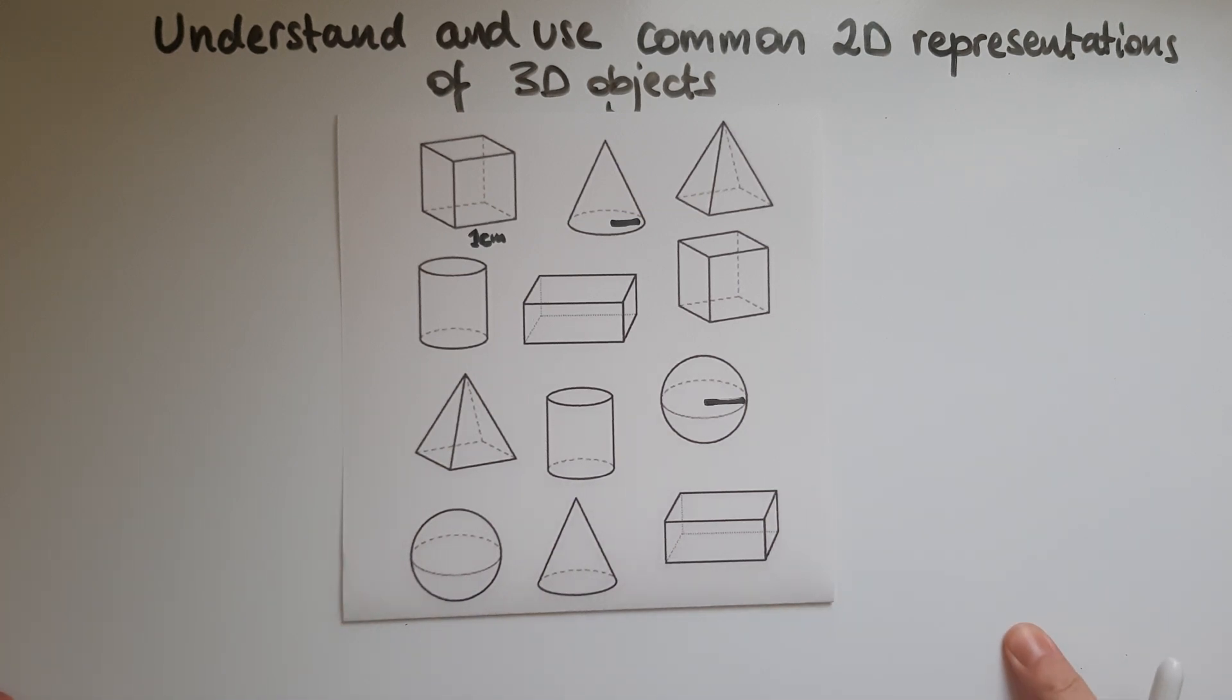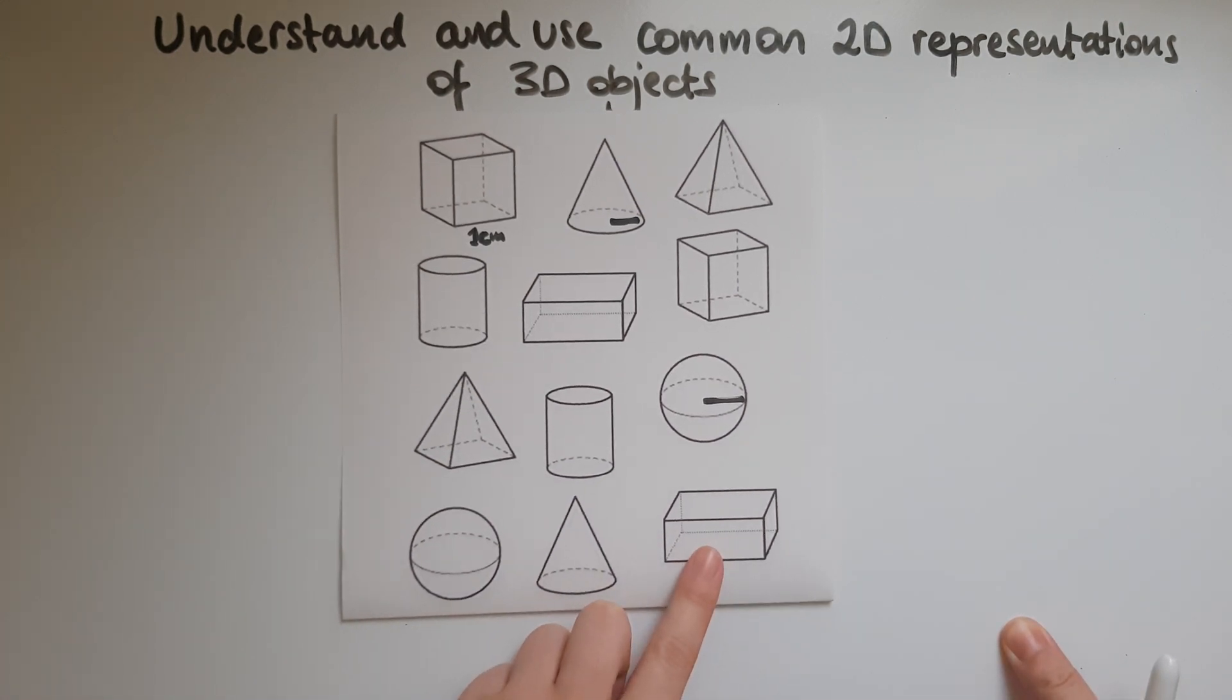So that shouldn't be a problem. Or when it comes to the cuboid, if we're given the dimensions we should be able to work out the surface areas. We should be able to work out the perimeter of certain faces or the area of certain faces or the volume.